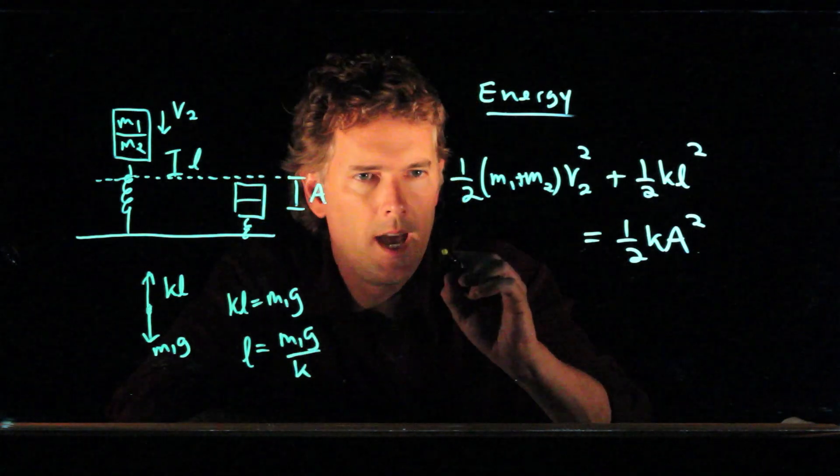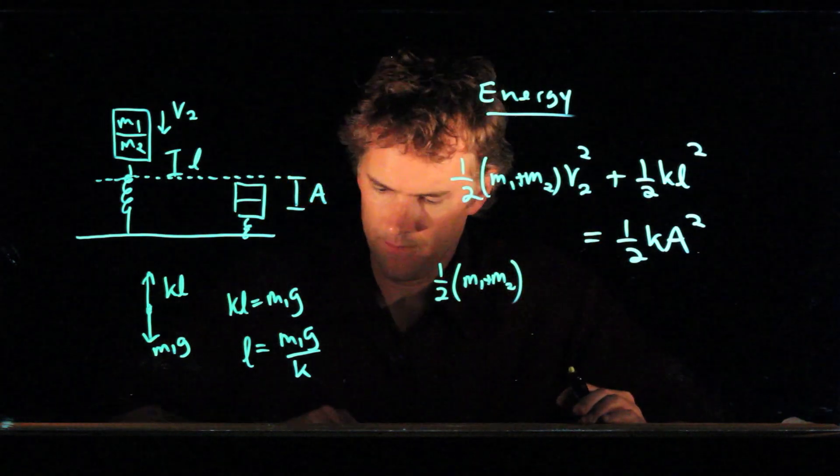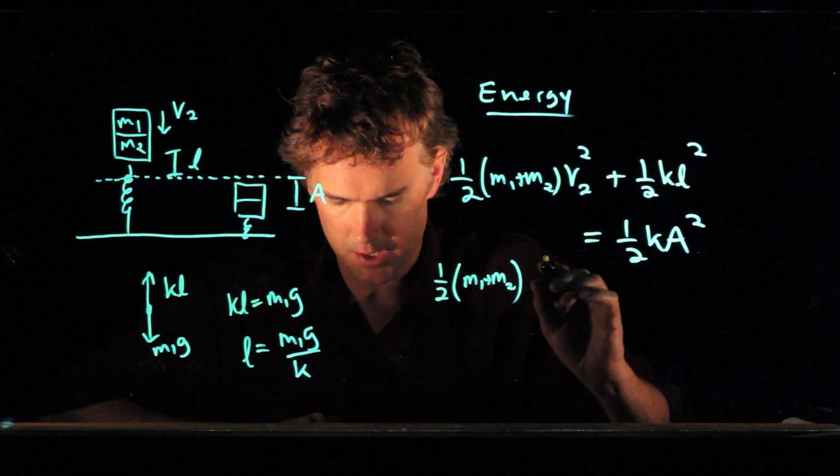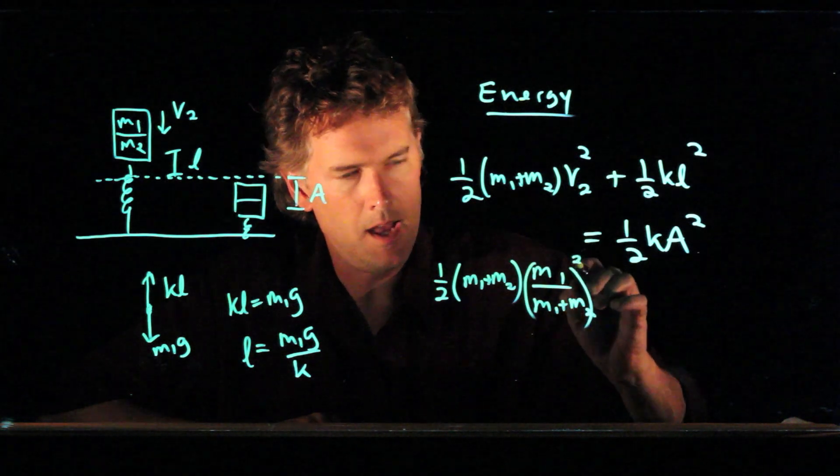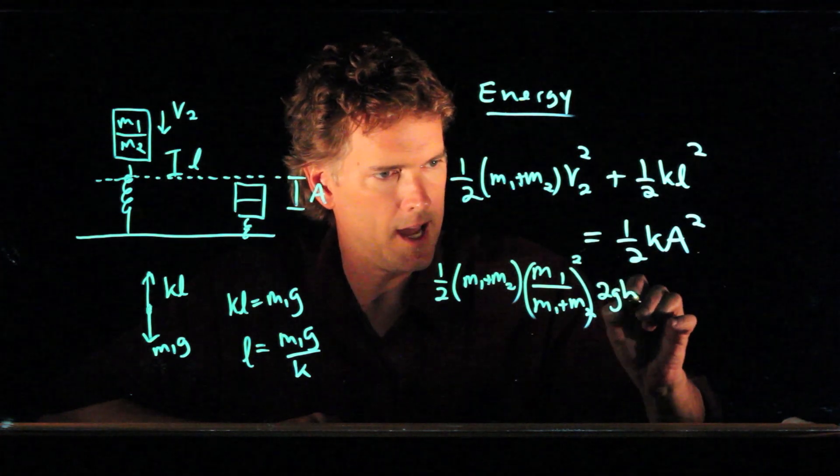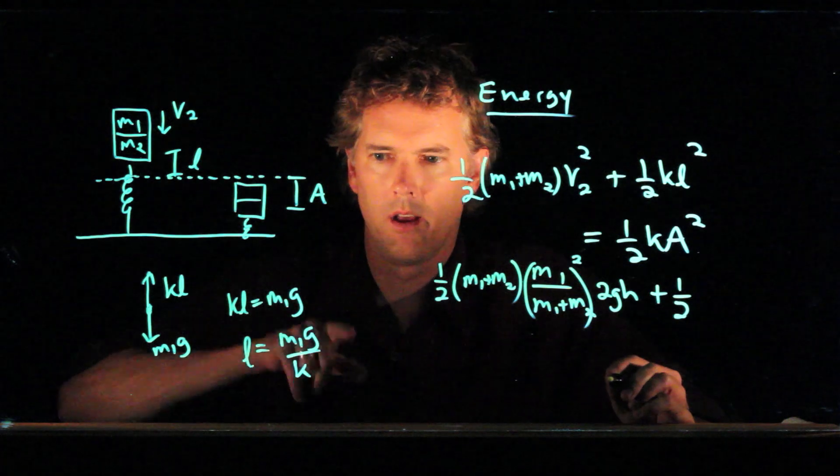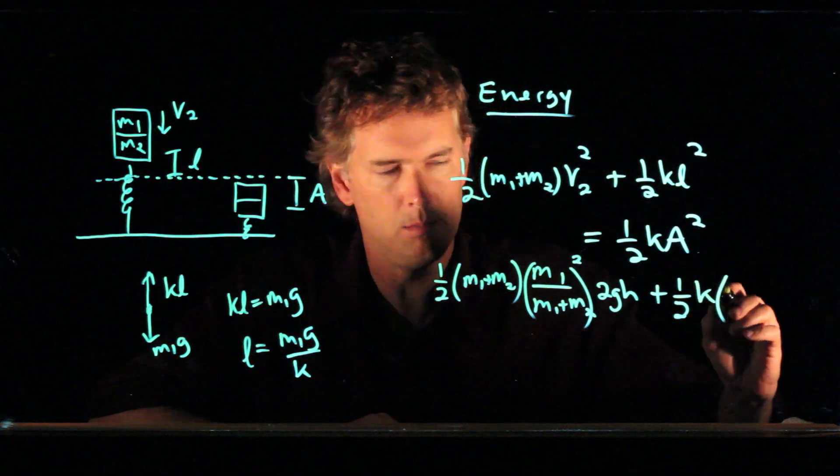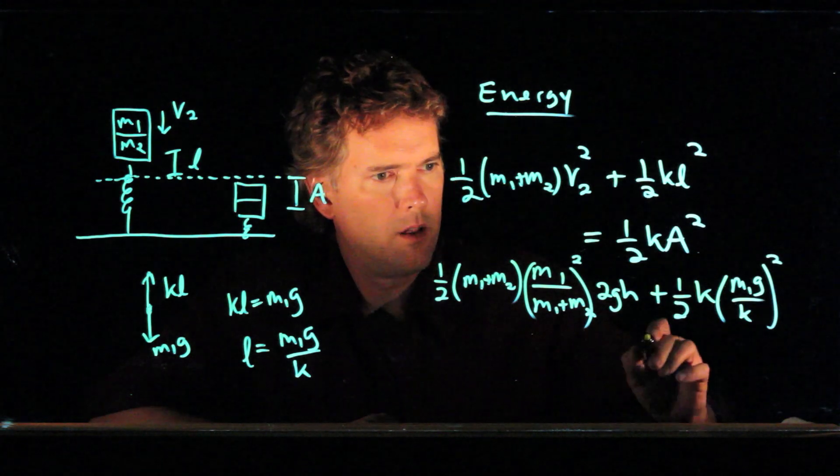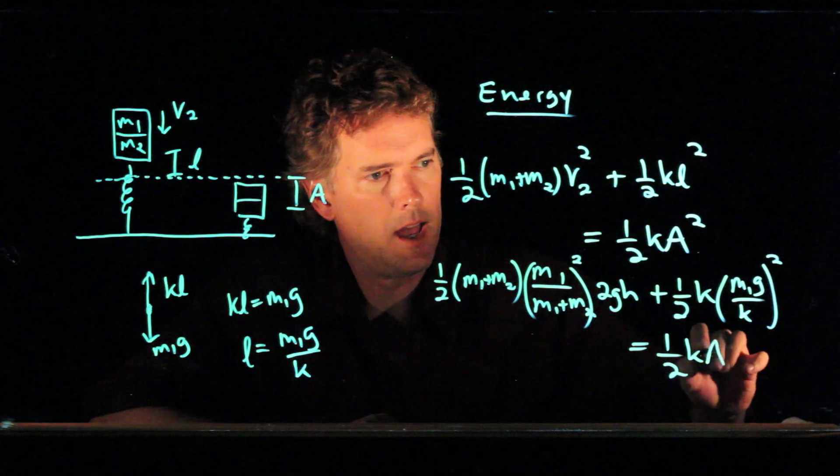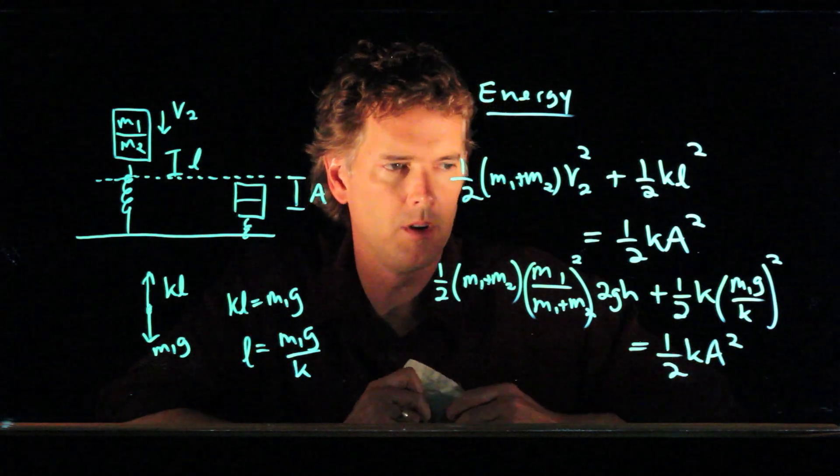What does our equation become? We have one-half M1 plus M2 times V2 squared. If we remember from just a minute ago, V2 was equal to M1 over M1 plus M2, and we're going to square all that. Then we had a square root of 2GH that we're going to square, so that just becomes 2GH. We have one-half KL squared. There is our L, so we get K times M1 G over K quantity squared, and all of that is equal to one-half KA squared. Now the task is to solve this equation for the amplitude capital A.